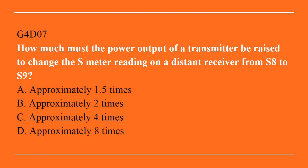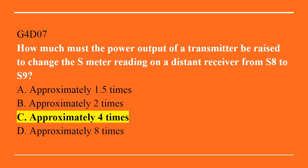G4D07: How much must the power output of a transmitter be raised to change the S meter reading on a distant receiver from S8 to S9? A. Approximately 1.5 times. B. Approximately 2 times. C. Approximately 4 times. Or D. Approximately 8 times. The correct answer is C. Approximately 4 times.